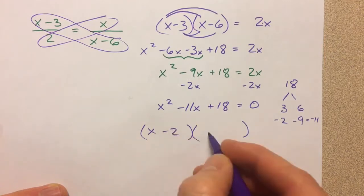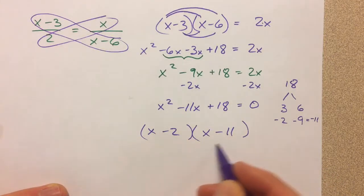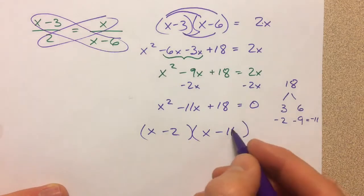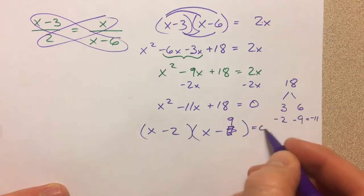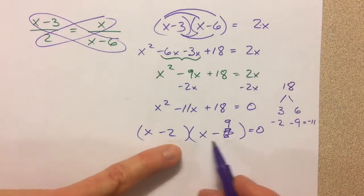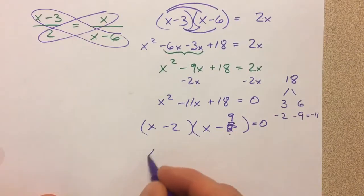So x minus 2, x minus 11. Again, negative 11. Sorry, let's try that again. x minus 9, these two terms. So you get the minus 2x and the minus 9x, which gets us to the negative 11. So then we finish it off.